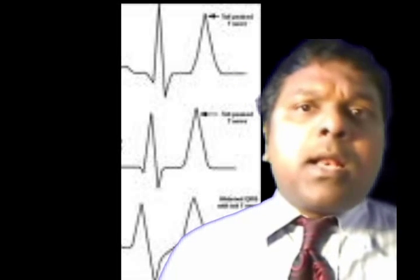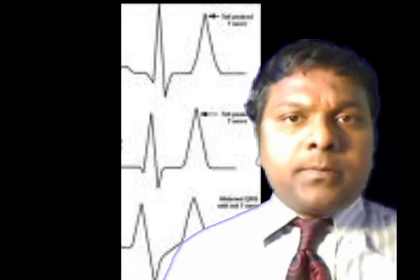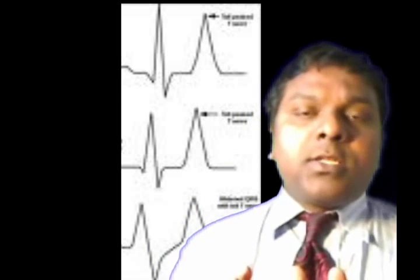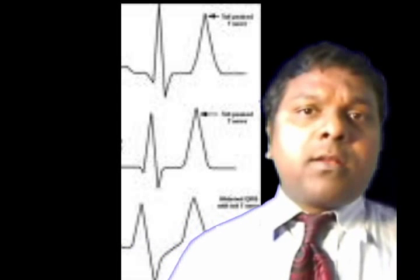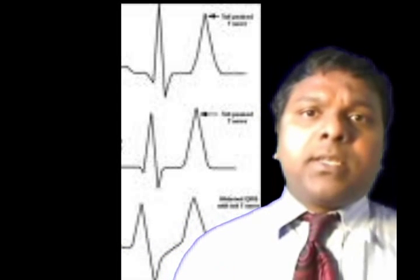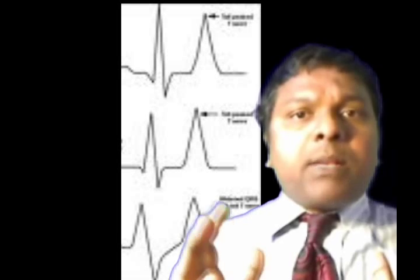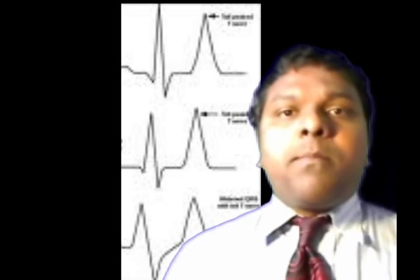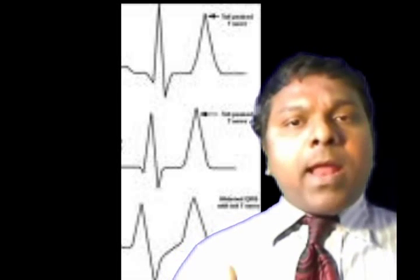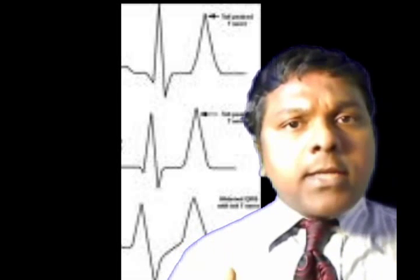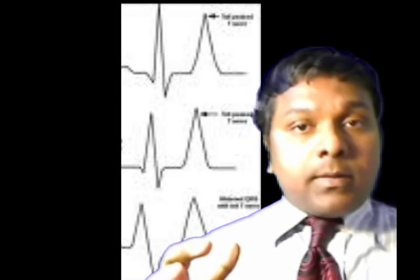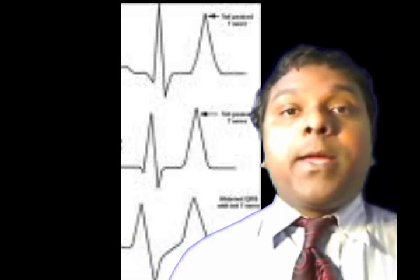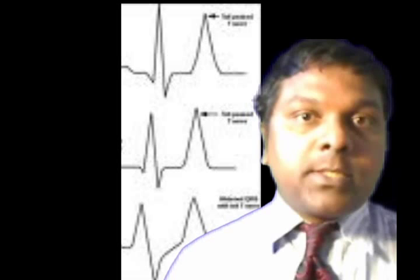Since potassium is mostly intracellular, conditions like thrombocytosis, leukocytosis, or hemolysis — anything that breaks up cells — increases potassium levels in the blood. When potassium cannot be excreted, it also causes hyperkalemia.